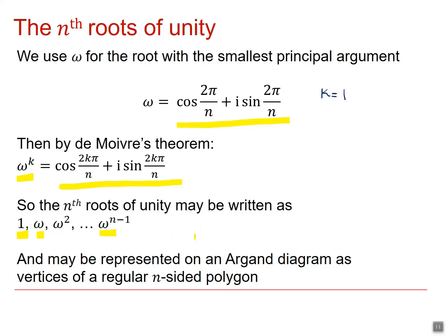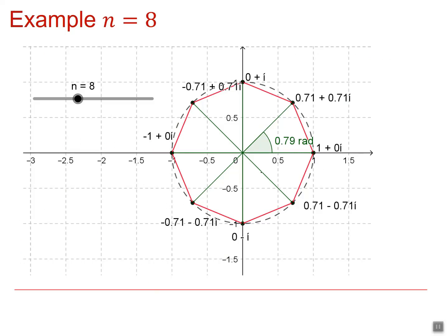And we've already seen they can be represented on an Argand diagram as vertices of a regular n-sided polygon. This is the Argand diagram for n equals 8. So omega would be the first of those, the one with the smallest argument.